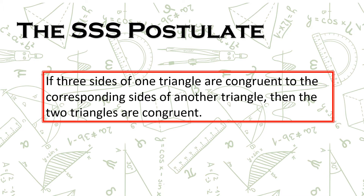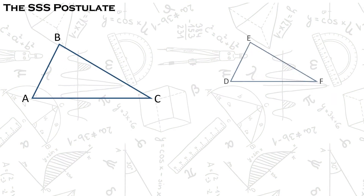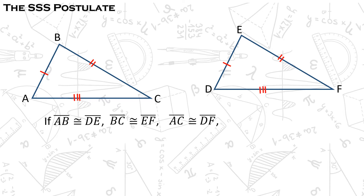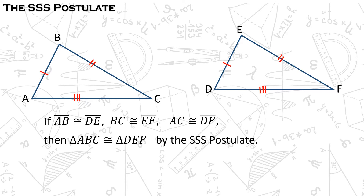The SSS postulate states that if three sides of one triangle are congruent to the corresponding three sides of another triangle, then the two triangles are congruent. In triangle ABC and triangle DEF, if side AB is congruent to side DE, side BC is congruent to side EF, and side AC is congruent to side DF, then triangle ABC is congruent to triangle DEF. These three corresponding sides are enough to state that the two triangles are congruent by the SSS postulate. The SSS postulate is sometimes called the side-side-side pattern.